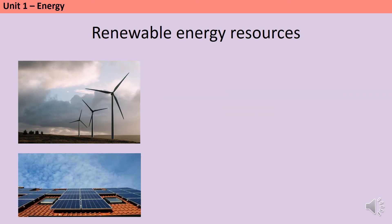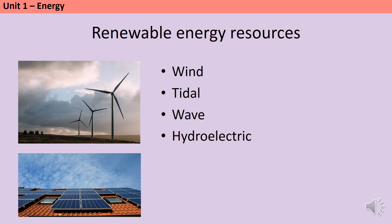In the UK, around 40% of our electricity is generated from renewable energy resources like wind. Wind, generated by air currents caused by the sun heating the Earth's atmosphere, is used to turn turbines, which turn a generator to generate electricity. Turbines are also used in tidal power, wave power, and hydroelectric systems. In a geothermal system, heated water from the Earth's crust is used to turn a turbine, while biofuels can be burned and used like fossil fuels.